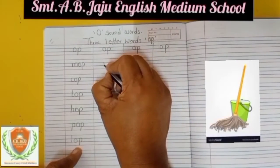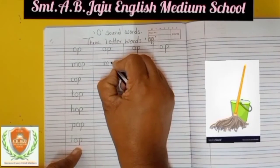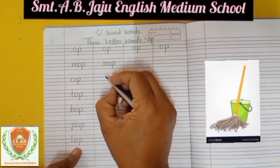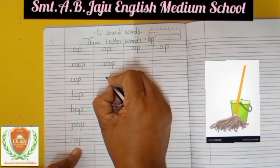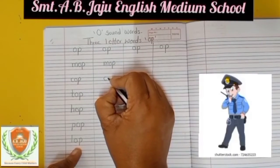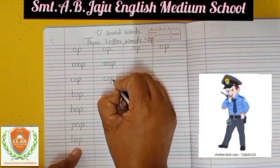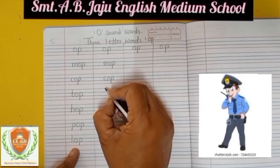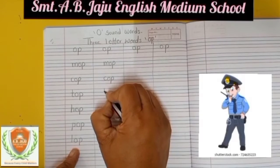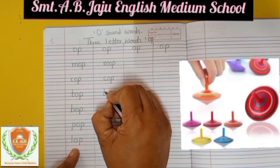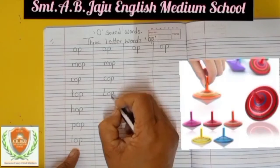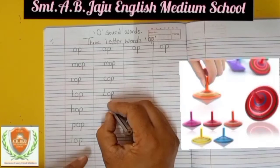Now again we will write down. Small M, small O, small P — M-O-P, mop. Small C, small O, small P — C-O-P, cop. Small T, small O, small P — T-O-P, top.